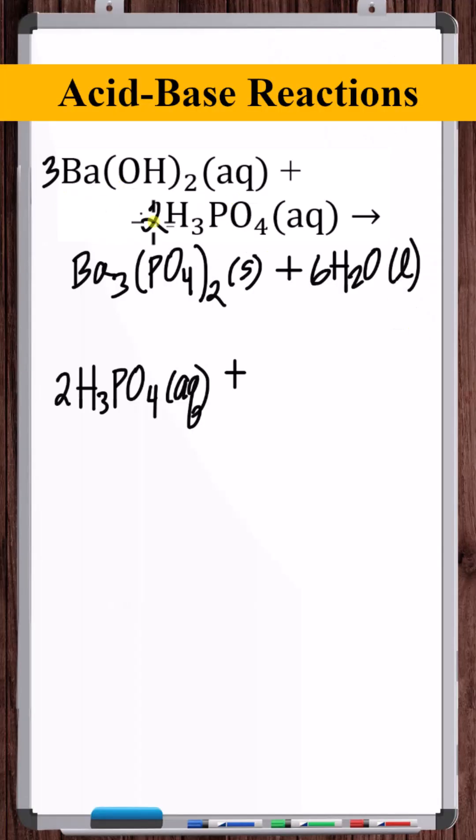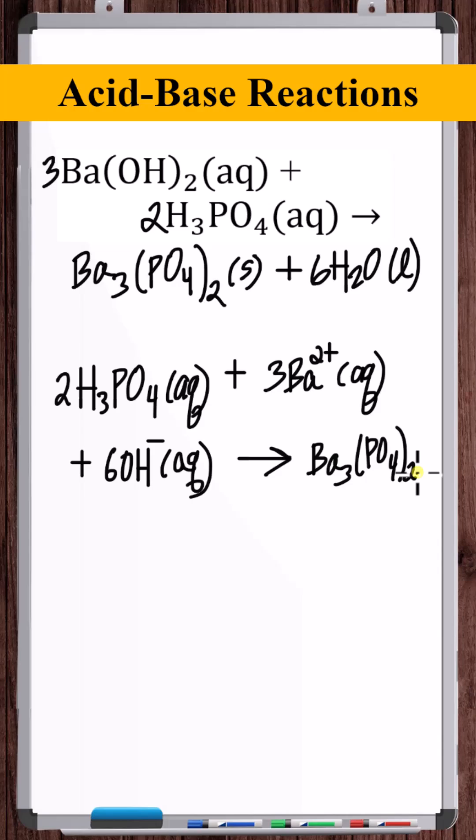We're going to break this up into ions. We've got three Ba²⁺ pluses, we've got six OH⁻ minuses. On the right side, this is just in the solid form, and this is just H₂O. So there's the ionic equation.